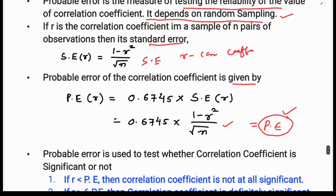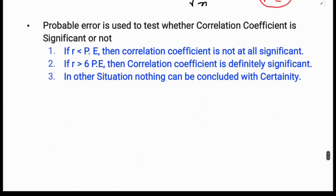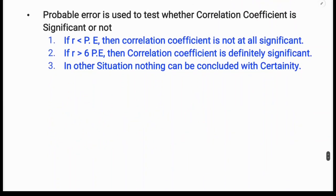This probable error is used to test whether the correlation coefficient is significant or not. If the correlation coefficient r is less than the probable error, then the correlation coefficient is not at all significant. It is not reliable.